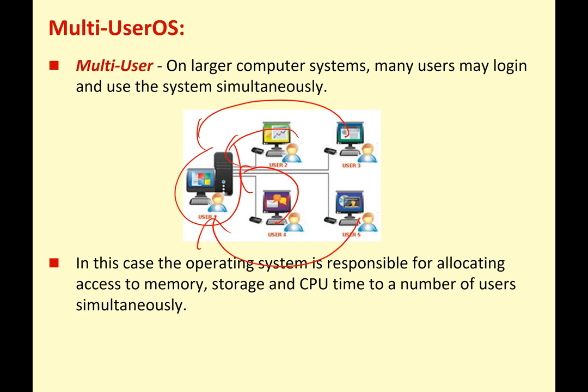In this case, the operating system is responsible for allocating access to memory, storage, and CPU time for a number of users simultaneously. This is taking advantage of the fact that modern CPUs can perform billions of calculations a second, so you can divide up time neatly between many users and many programs without anybody actually being aware that's what you're doing.